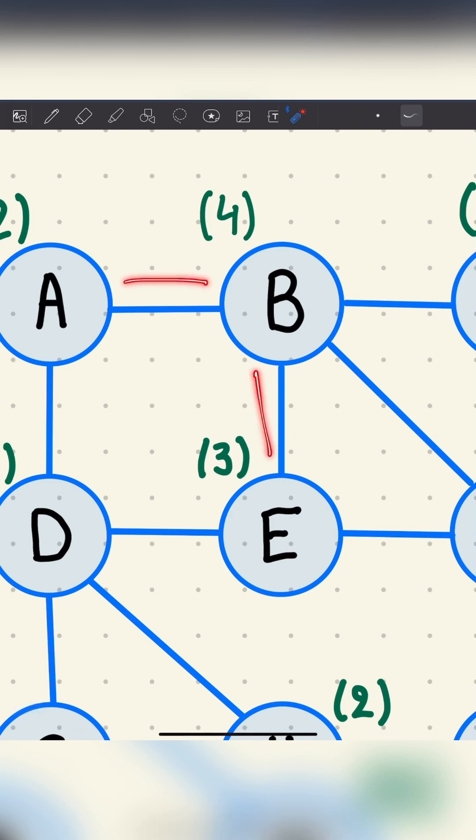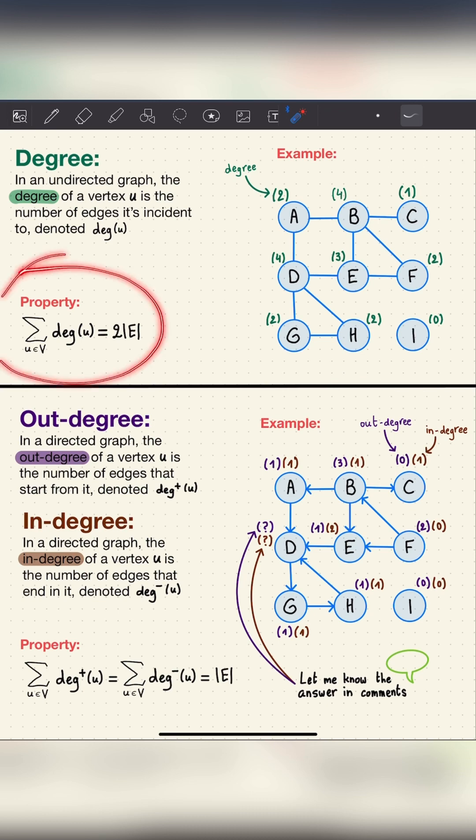For example, here b has a degree of 4 because it has 4 edges incident to it. One property is that the sum of degrees of all vertices of a graph is equal to 2 times the number of edges.